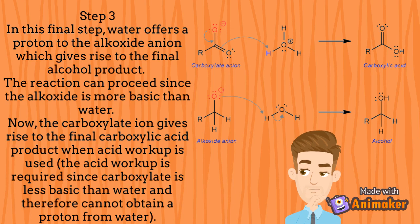Step Number 3: In this final step, water offers a proton to the alkoxide anion which gives rise to the final alcohol product. The reaction can proceed since the alkoxide is more basic than water. The carboxylate ion gives rise to the final carboxylic acid product when acid workup is used. The acid workup is required since carboxylate is less basic than water and therefore cannot obtain a proton from water.